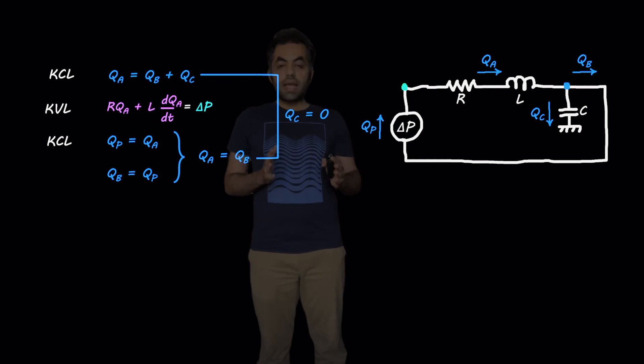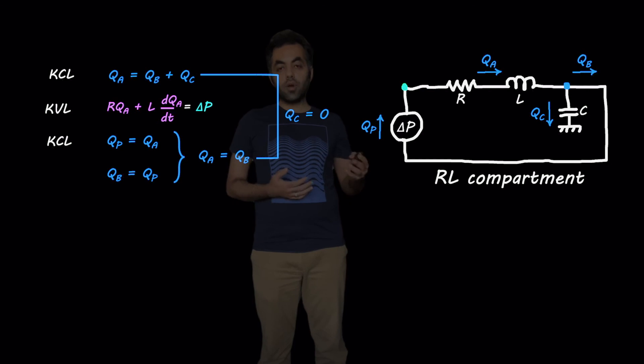So, an important conclusion that we have here is, whenever we have an RLC compartment, a single RLC compartment in our circuit, the flow that goes through the capacitor is zero. That is always true. In other words, in this case, we are not dealing with an RLC compartment anymore. It's an RL compartment.